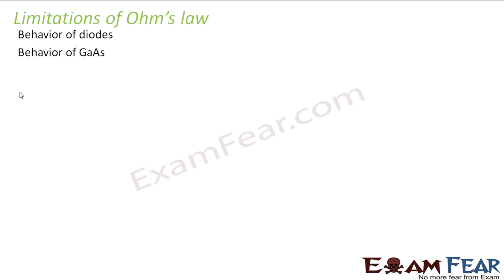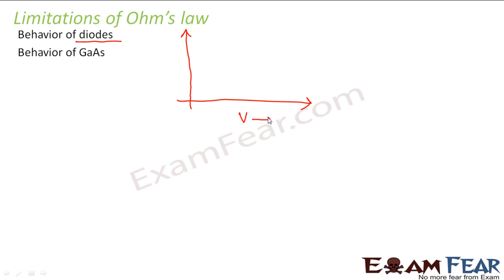Now we studied Ohm's law, but do you think Ohm's law is a foolproof law, or are there certain limitations? Yes, there are certain limitations of Ohm's law — it is not universally true for every object. When we look at the behavior of diodes, which are electronic elements that allow flow of current in one direction, when you plot the V-I characteristic (the voltage-current graph) for diodes you get a curve instead of a straight line. This shows that Ohm's law is not true for diodes. Similarly, in the case of gallium arsenide, it is seen that Ohm's law doesn't hold true.